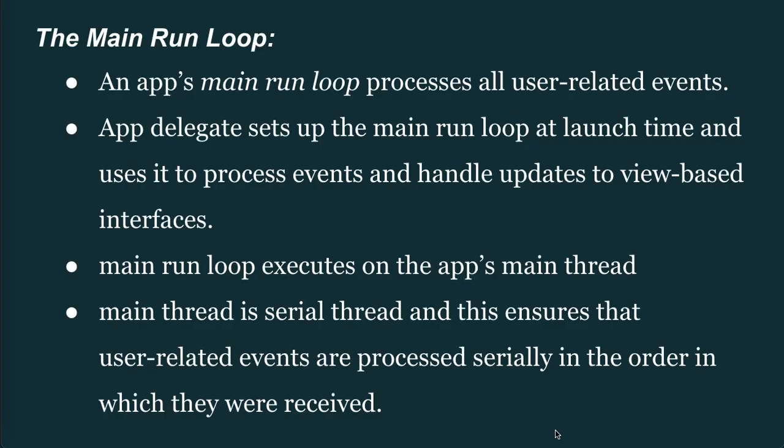The main run loop processes all user-related events. The App Delegate sets up the main run loop at launch time and uses it to process events and handle updates to view-based interfaces. The main run loop executes on the app's main thread. The main thread is a serial thread, which ensures that user-related events are processed in the order in which they were received.